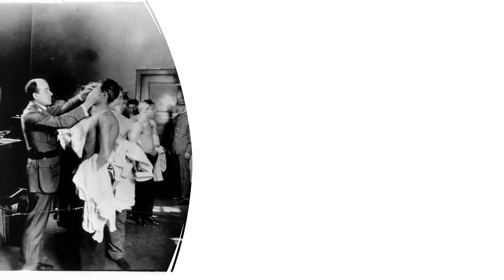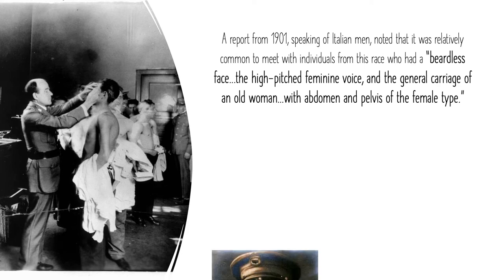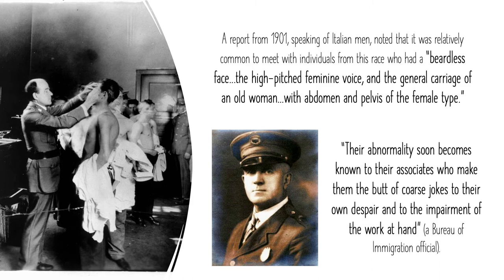Most agents associated these things with so-called primitive races and the lower classes, meaning that poor immigrants and non-whites were the most likely targets for investigation. As a Public Health Service report from 1901, speaking of Italian men, noted, it was relatively common to meet individuals from this ethnic group who had "a beardless face, the high-pitched feminine voice, and the general carriage of an old woman with abdomen and pelvis of the female type." Prospective immigrants who displayed "lack of sexual development" or "arrested sexual development" were held back by officials who often believed this would make them economically dependent on the government. As one official noted, these individuals were "bad economic risks" because "their abnormality soon becomes known to their associates who make them the butt of coarse jokes to their own despair and to the impairment of the work at hand."